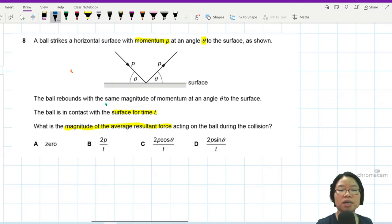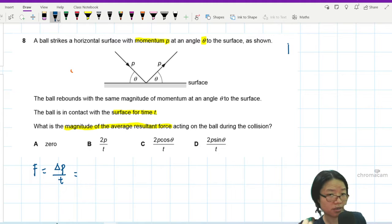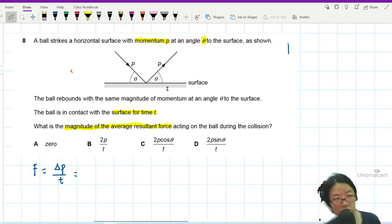So immediately I think to myself, to find resultant force I will need change in momentum over time. Unfortunately our momentum is a vector, as it's pretty obvious from this drawing. So to find a change in momentum for vectors, I need to take initial minus final.